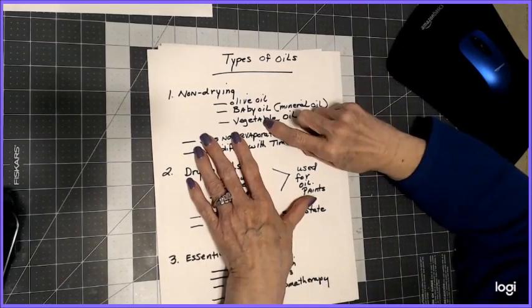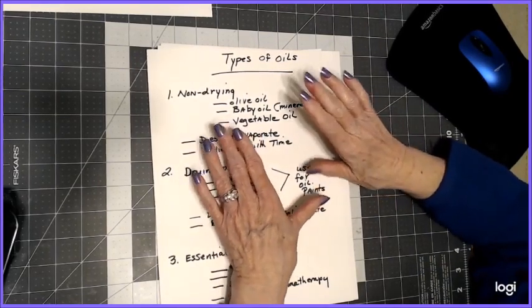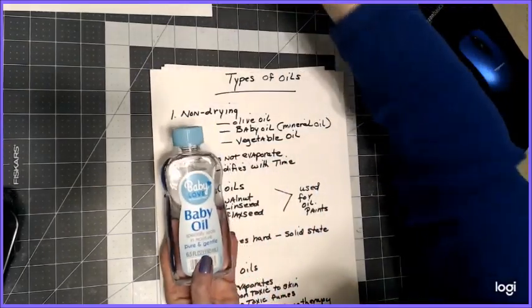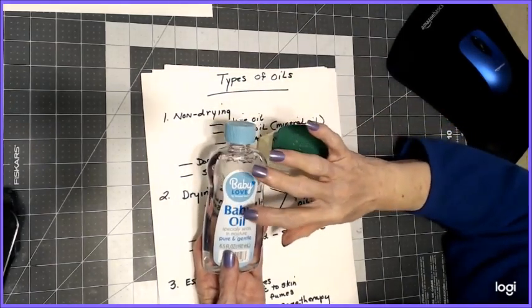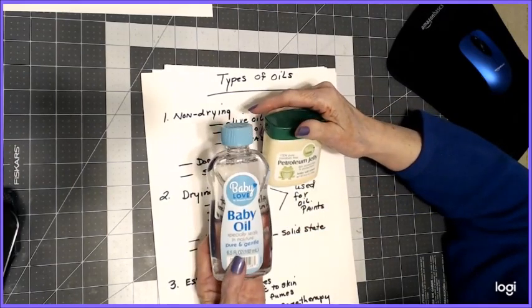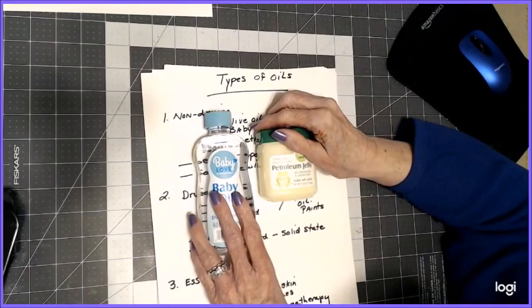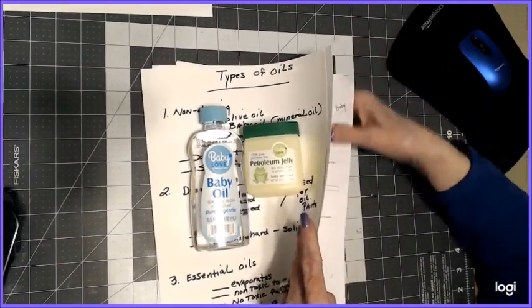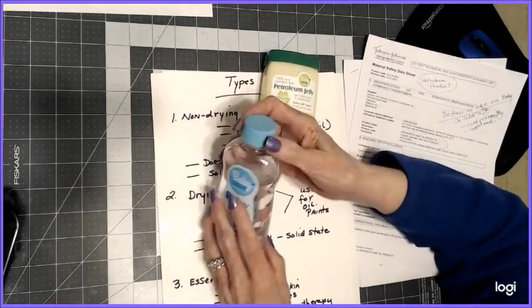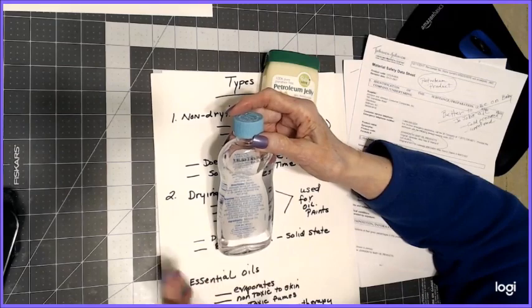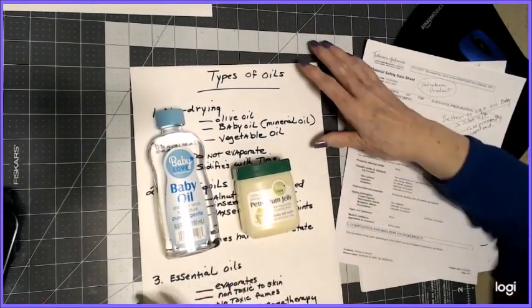There's non-drying oils, which are your olive oil, your baby oil, and baby oil is basically mineral oil and vegetable oil. A lot of people will blend with baby oil or Vaseline on their pictures. You have to make sure you don't get too much of the baby oil or it will stain your picture. I've had that happen in the past. Same with the Vaseline. Here's the thing about these two products that I wanted to share with you.